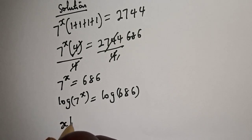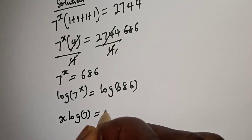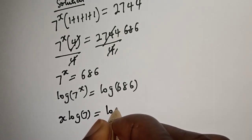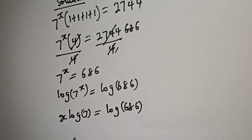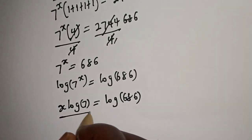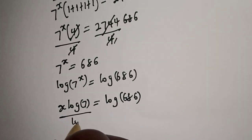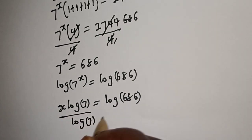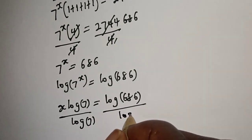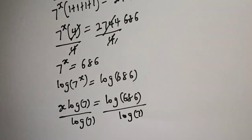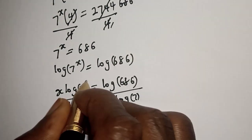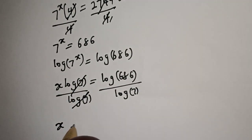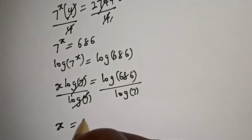Then s times log 7 is equal to log 686. Now we are looking for the value of s. Let's divide both sides by log 7. Divided by log 7 — this will cancel this. So s is equal to log 686 over log 7.